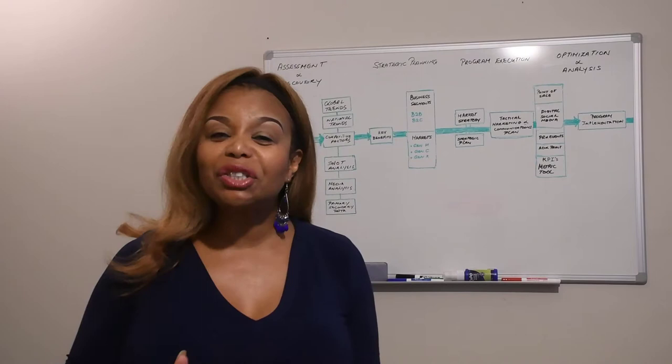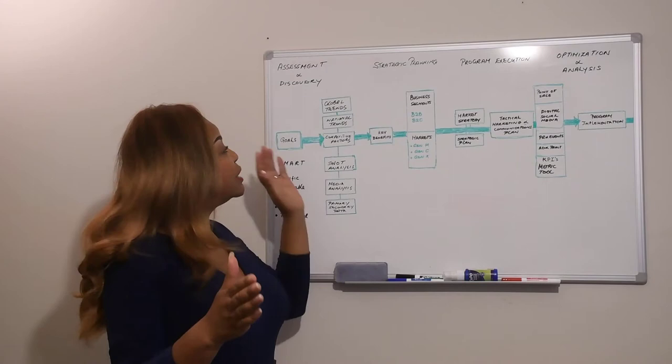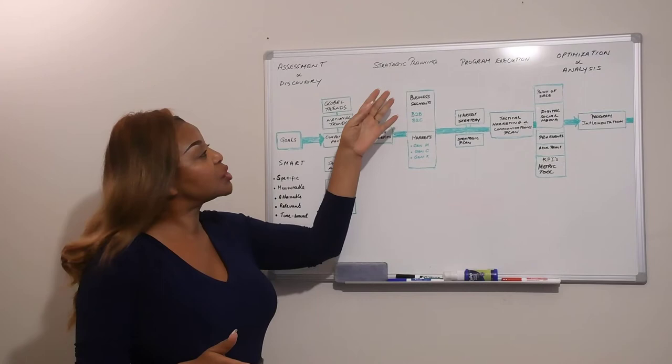Today, we're going to talk about communications planning. I have a great communications planning process that I want to share with you. It's a four-phase process. In the first phase, we have assessment and discovery, second phase is strategic planning, program execution, and optimization and analysis.